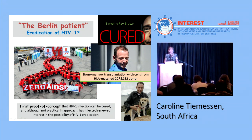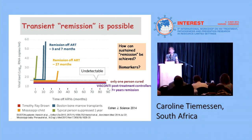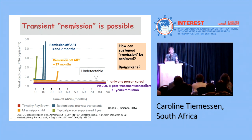We know only one person has been cured, so it's possible, although not a practical approach. But transient remission is also possible. There have been two Boston bone marrow transplant cases - they did not receive cells from anyone who did not have CCR5, and they did rebound, but had a delayed rebound with remission off ART at three and seven months. In the case of the Mississippi baby, treated within 30 hours of infection and lost to care at about 18 months, she experienced a period of remission off ART for 27 months.